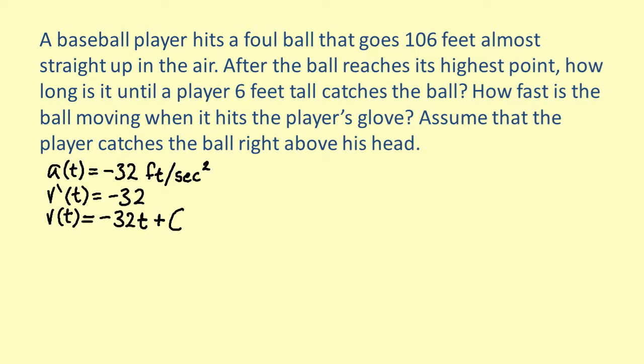We can find the value of c using our initial value. When the ball reaches its peak, its velocity is zero. So, v equals zero. Substituting, we find that c is equal to zero, so v equals negative 32t.